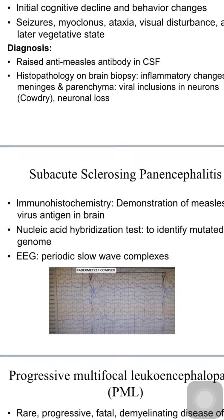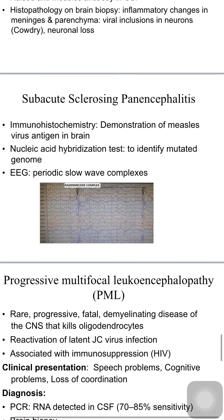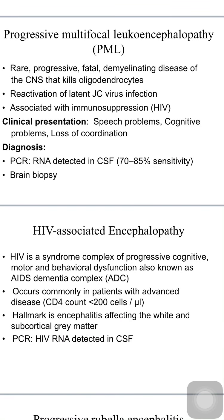Progressive multifocal leukoencephalopathy is due to reactivation of latent JC virus, a polyomavirus infection that causes demyelination by involving oligodendrocytes. It is mainly seen in immunosuppressed individuals, especially HIV-infected individuals. Clinical presentation includes speech problems, cognitive problems, and loss of coordination. Diagnosis is by detecting JC virus RNA in the CSF by PCR or by brain biopsy.